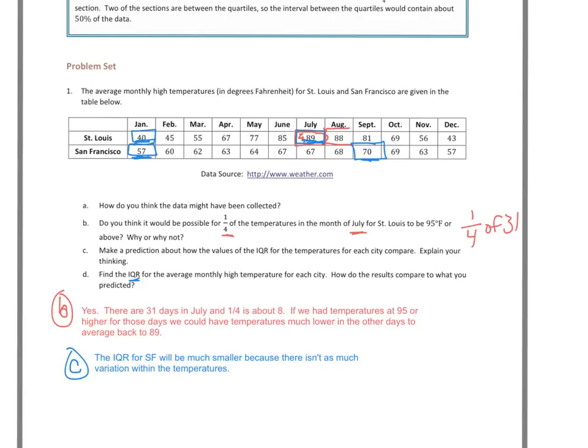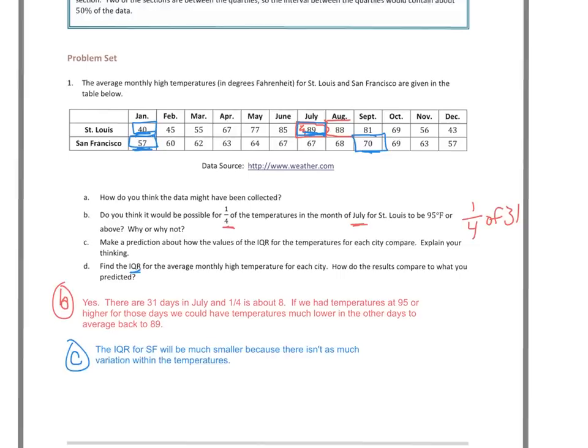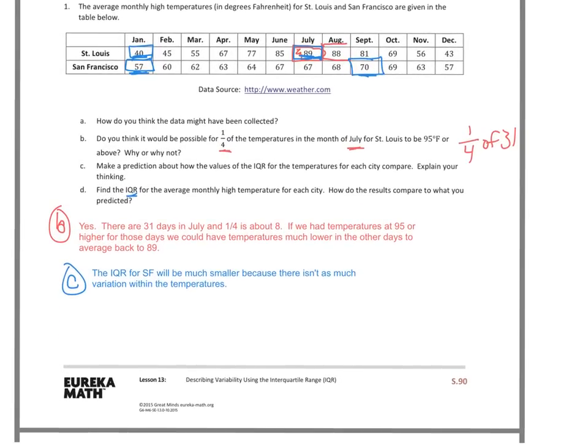Part D asks us to find the interquartile range for the average monthly high temperatures for each city and compare them. I'll find the IQR for St. Louis so you can see the process, and then you can do the same for San Francisco. To start, I'm going to list the St. Louis values in order from least to greatest.